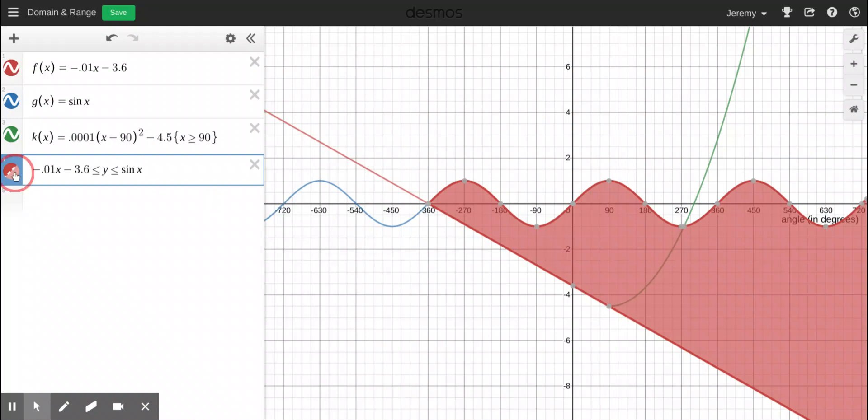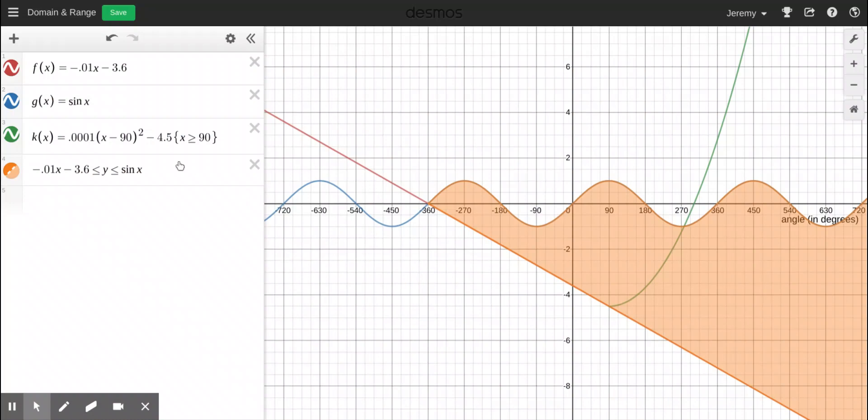Let me make this orange though. I'm going to hold that down until the color thing pops up and boom. I want this orange, but I want it to stop right here because I want to go between these two bits. So I'm going to cut it off at 90. So I'm going to do X is less than or equal to 90. There we go.